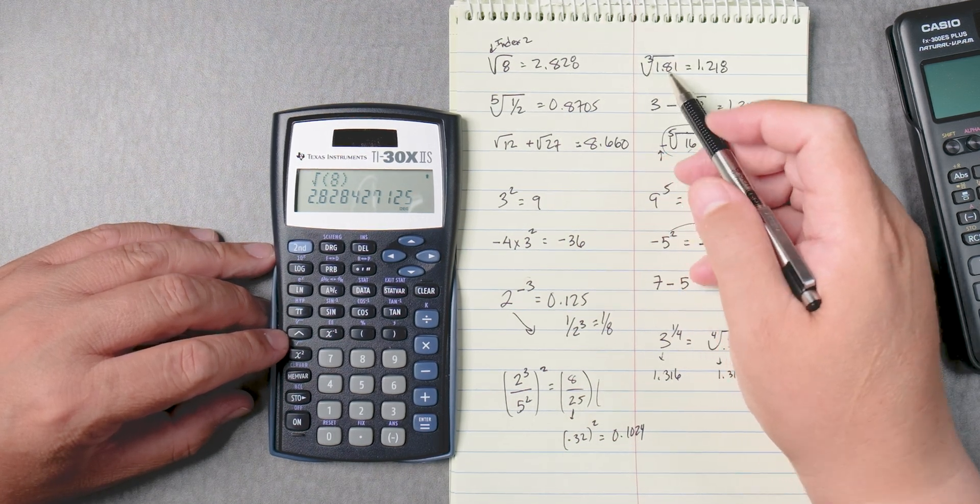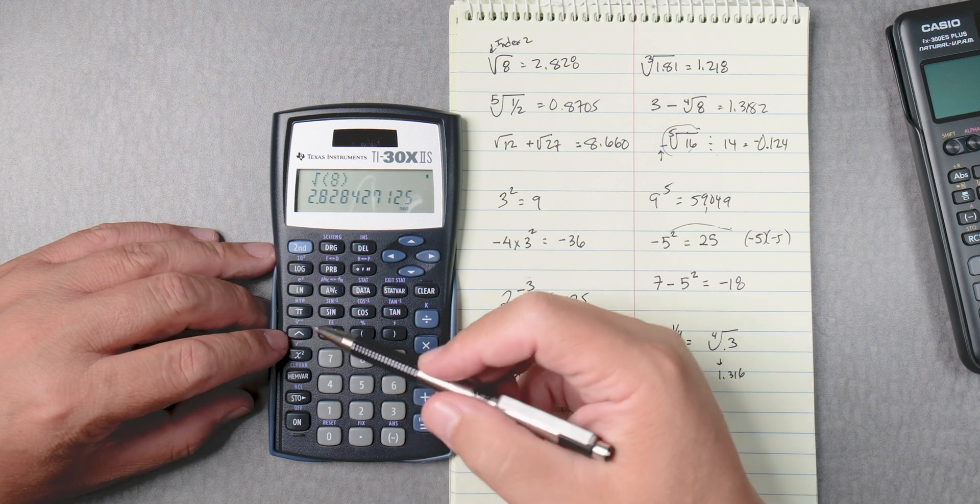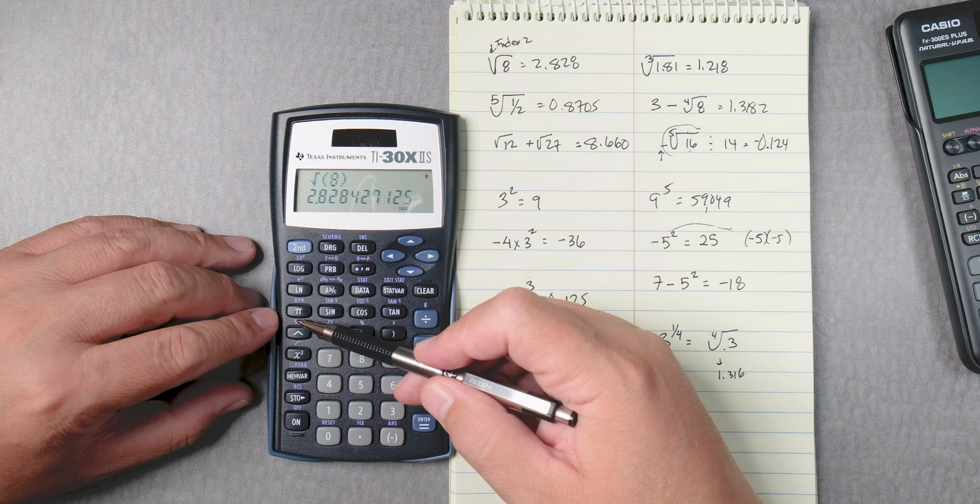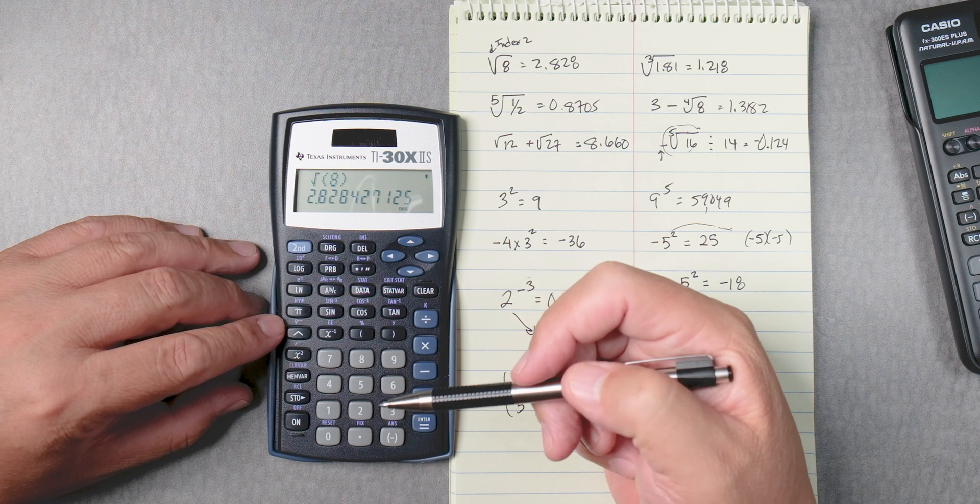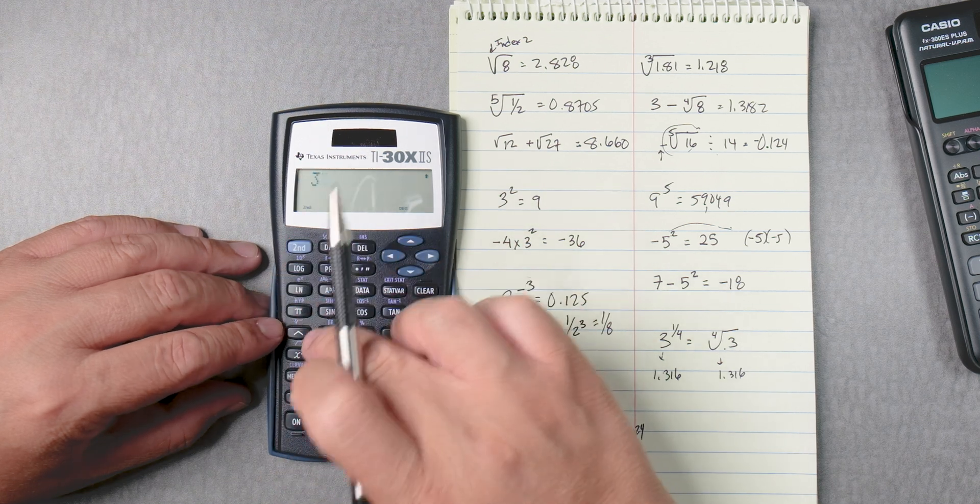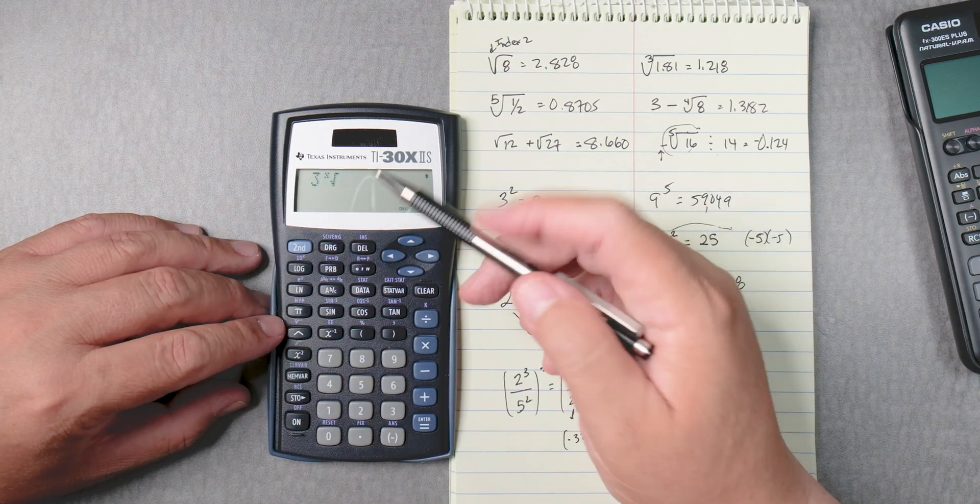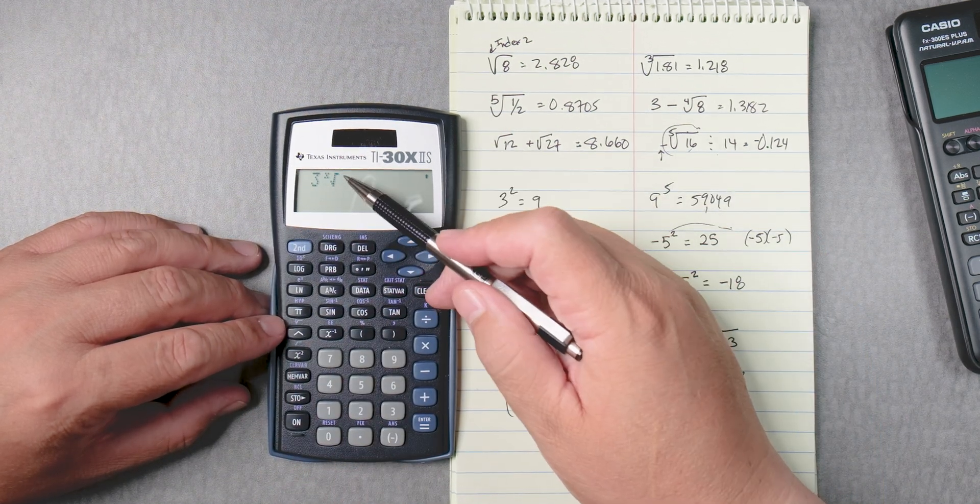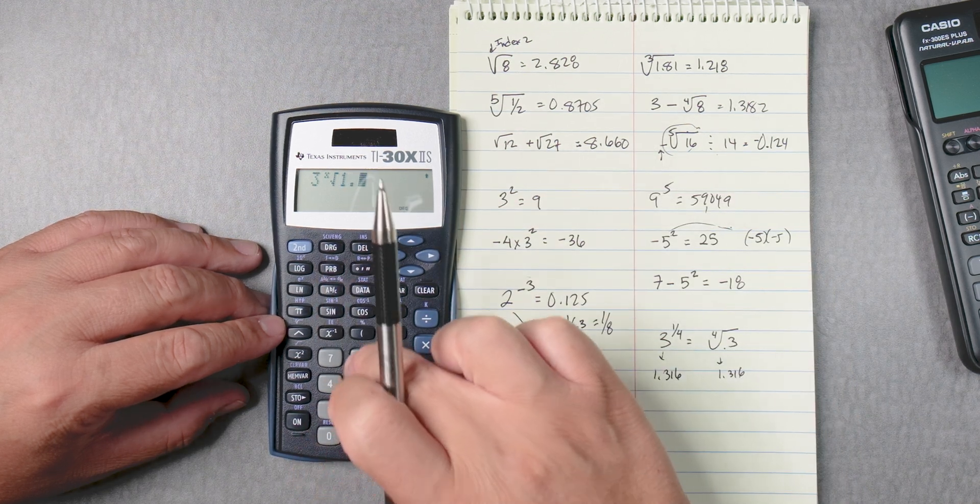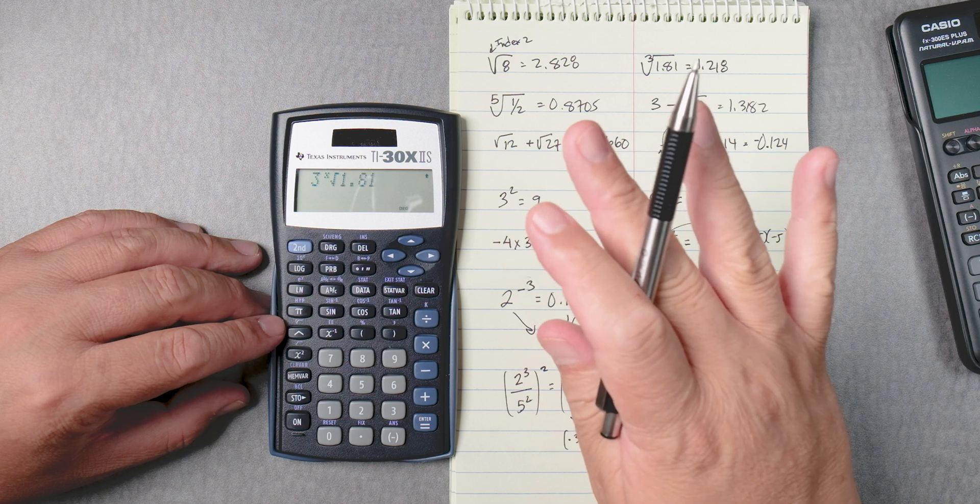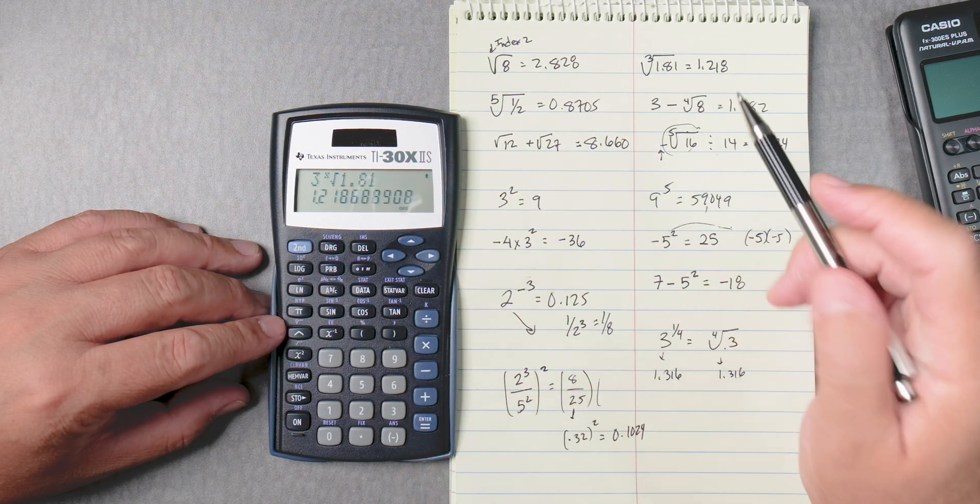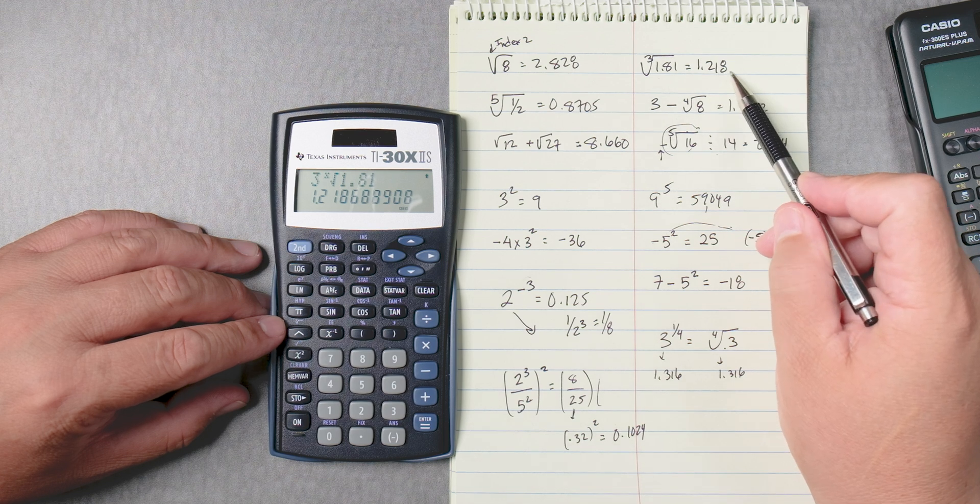This one's the third root of 1.81. So that one is over here on the caret key above. It's the square root, and it has an index of x. So what do we do? So we go, we press 3, second, caret. You notice that there is no parenthesis here, like the previous one. So 1.81. And then you leave it alone. You don't need to close it. You close it, you get an error. So enter. 1.218. Good.